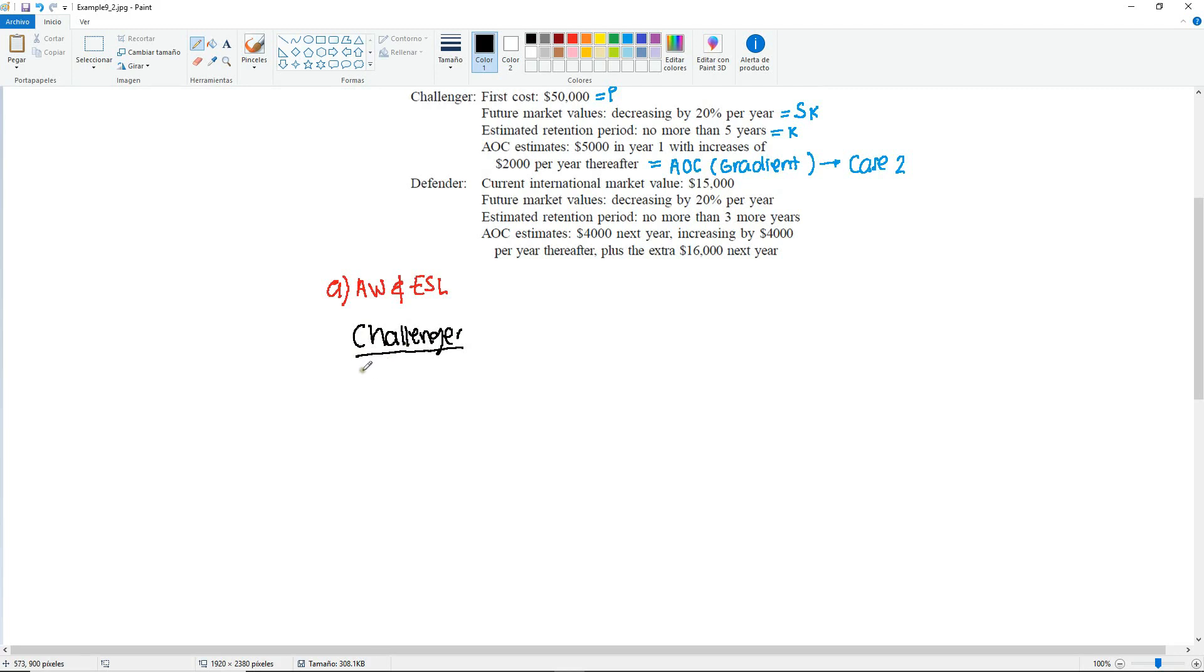So I'm going to write down the general equation for this, which is the total annual worth in year K. It's going to be minus P, find A given P, the interest rate in year K, plus the salvage value in year K, find A given F, at an interest in year K, minus the annual worth of annual operating cost. And I specify that it's the annual worth because here we don't have the annual worth given. We have to get it from the gradient.